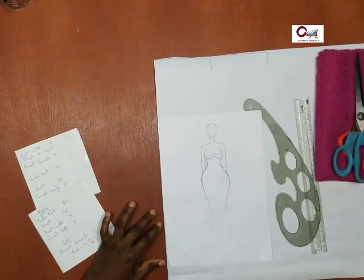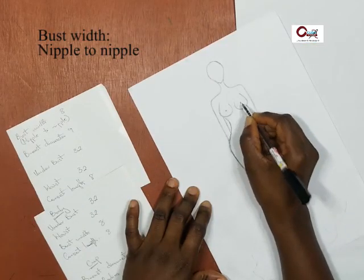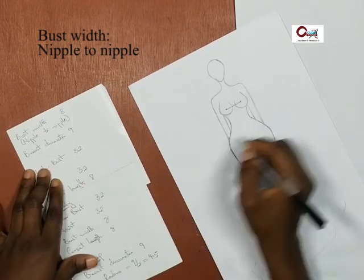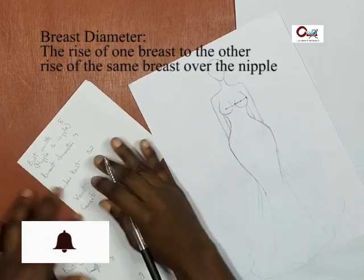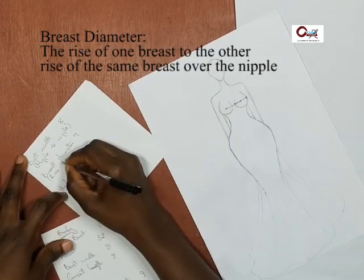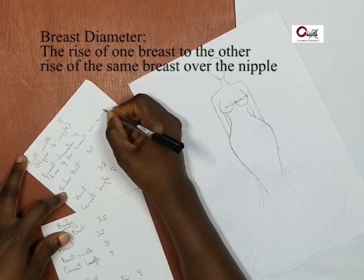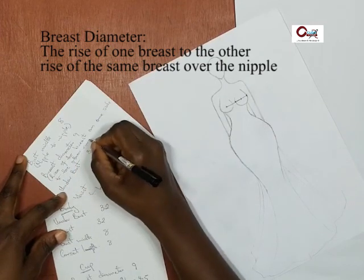The measurements you will need: you will need your bust width, which is nipple to nipple, right there. Pick your measurement. Then bust diameter, from the rise of one of the breast from one side over the nipple to the other end. That's the diameter of the breast.